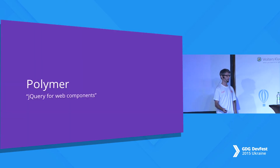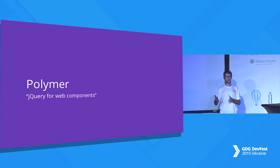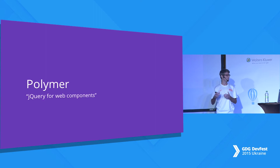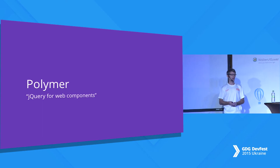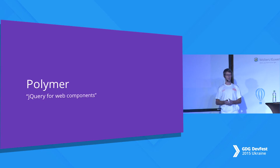I'd like to start with what Polymer actually is. I would compare Polymer to jQuery, because jQuery helped us to build web applications in a much better way — it was quicker and helped us to work with the DOM. So Polymer helps us to build applications with web components. Web components is a W3C standard, and it's already implemented in Chrome. With Polymer, you can start using web components — you can use your own custom HTML elements.